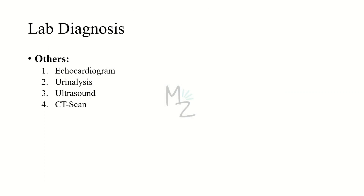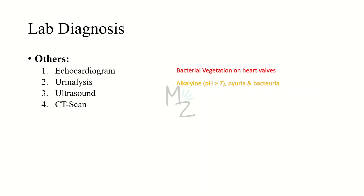Other diagnostic tests include echocardiogram to find bacterial vegetations on heart valves, urinalysis to find urine pH — if greater than 7 it is alkaline — and to check for pyuria or bacteriuria. Ultrasound and CT scan are also done to reveal biliary tract infections and abdominal and pelvic abscesses.